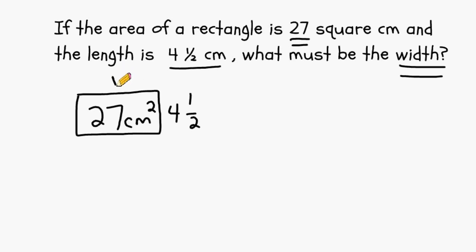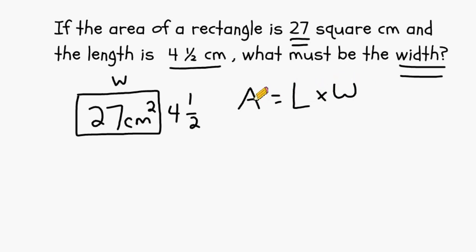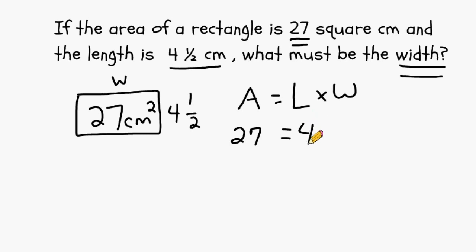One thing we know about area is that whatever the length is times the width will produce the area of the rectangle. We already know what the area is — the area is 27 — so I am going to substitute that in for the A, and we know that is going to be equal to the length of 4.5 being multiplied by whatever the width is.